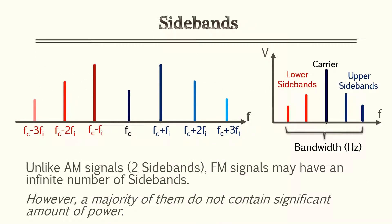Similar to amplitude modulation, frequency modulation also has sidebands. However, unlike amplitude modulation which consists of two sidebands, frequency modulation consists of several — an infinite number of — sidebands. However, the majority of them do not contain a significant amount of power.